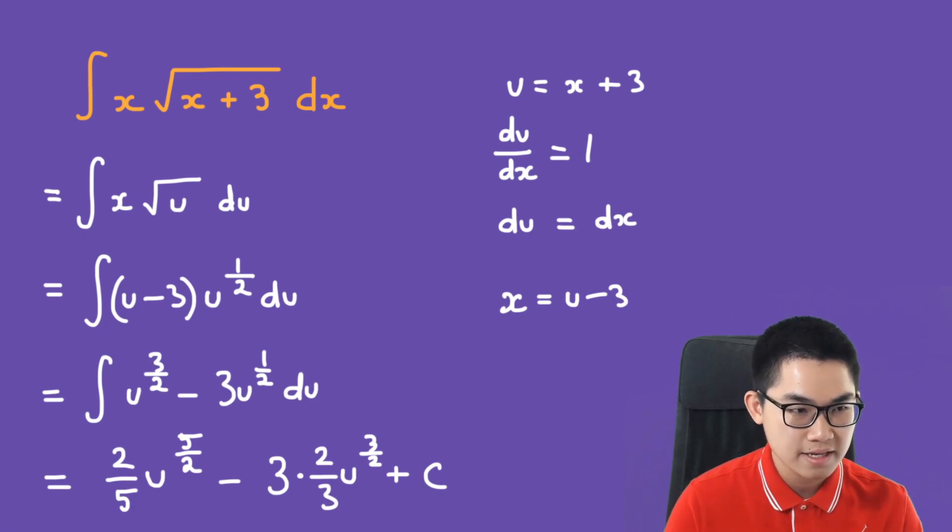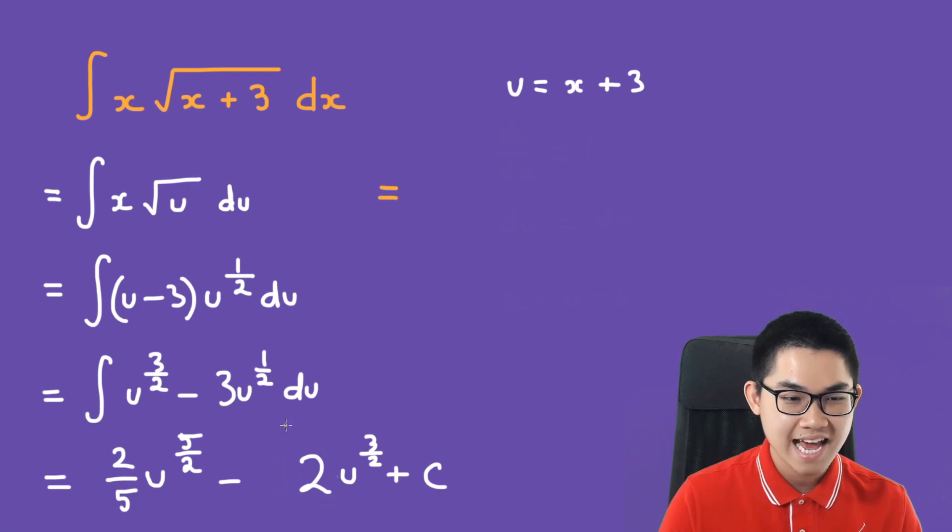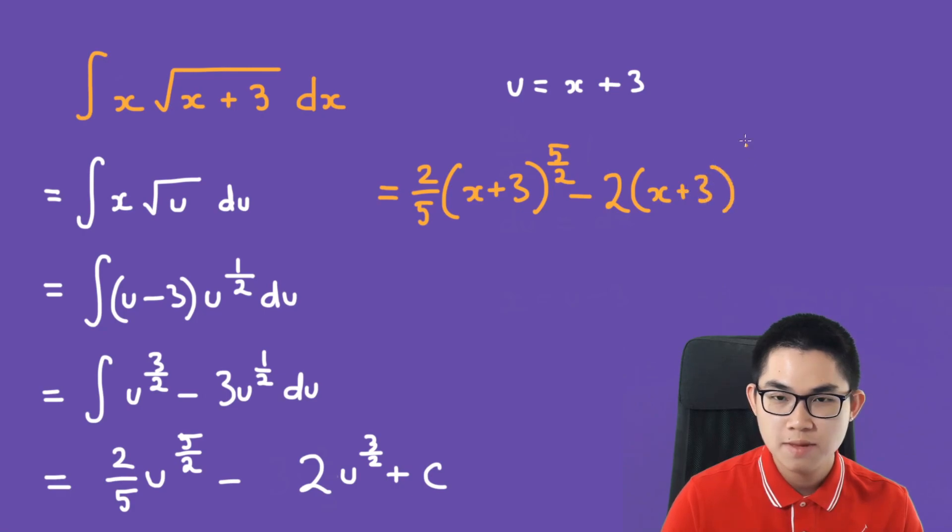And the last step is to put the u back. So we have 2 over 5 times u to the power of 5 over 2 minus 2 times u to the power of 3 over 2 plus c.